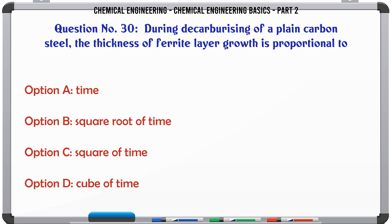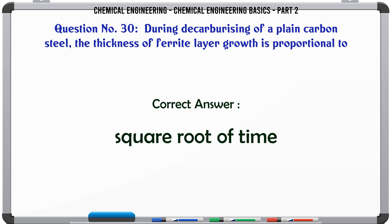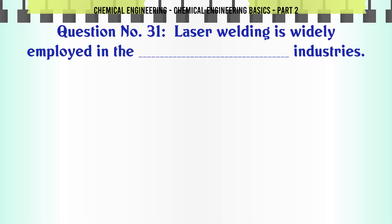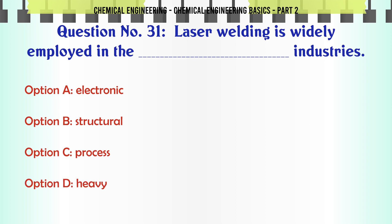During decarburizing of a plain carbon steel, the thickness of ferrite layer growth is proportional to: a) time, b) square root of time, c) square of time, d) cube of time. The correct answer is: square root of time.